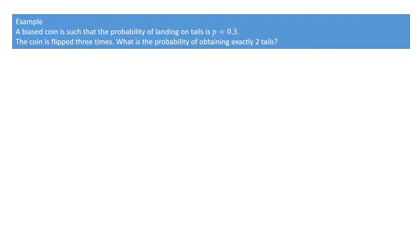We're given an example where a biased coin has a probability of obtaining tails of p equal to 0.3. The coin is flipped three times and we're asked: what is the probability of obtaining exactly two tails? We'll solve this in two ways — first using a tree diagram, then using the binomial distribution formula — to highlight how the formula gives the same results without needing to draw the tree.